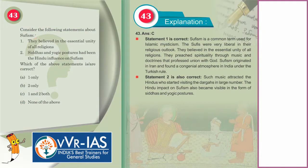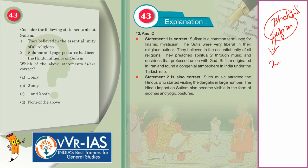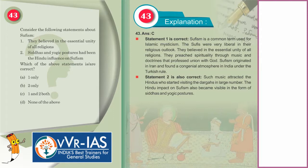Now the 43rd question considers the following statements about Sufism. Bhakti movement and Sufism are very important from the perspective of UPSC prelims as well as mains — every year since 2013, when the pattern changed, and since 2011 when CSAT was introduced, these questions have figured in both prelims and mains. The two statements given are: they believed in the essential unity of all religions; and Siddhas and yogic postures had been the Hindu influence on Sufism.